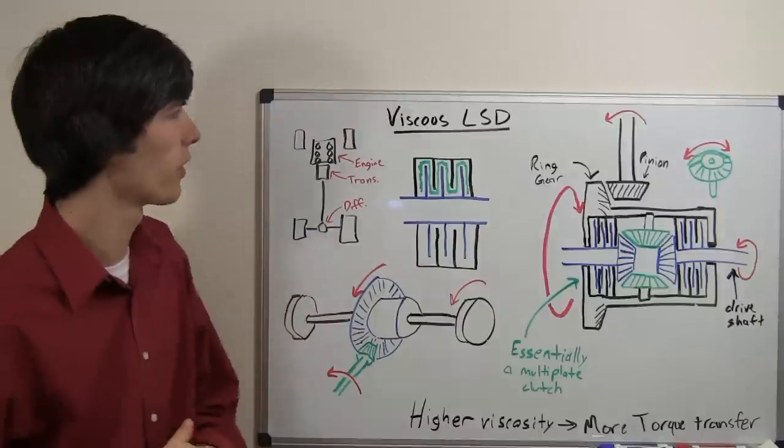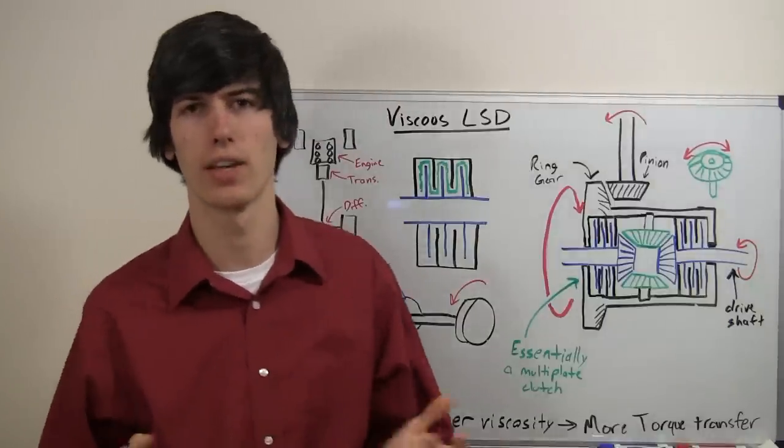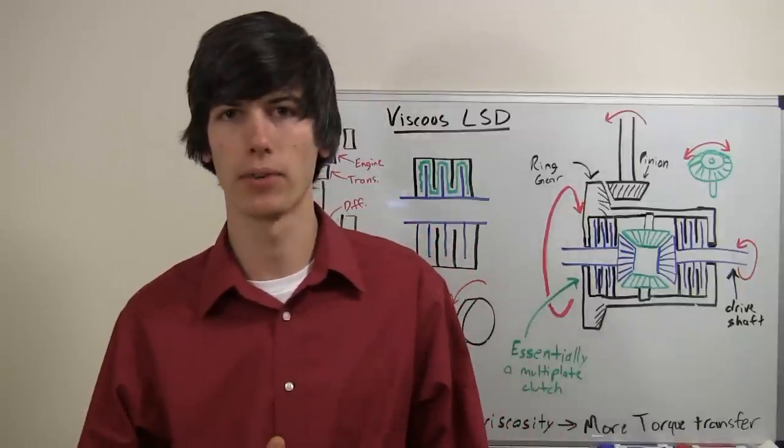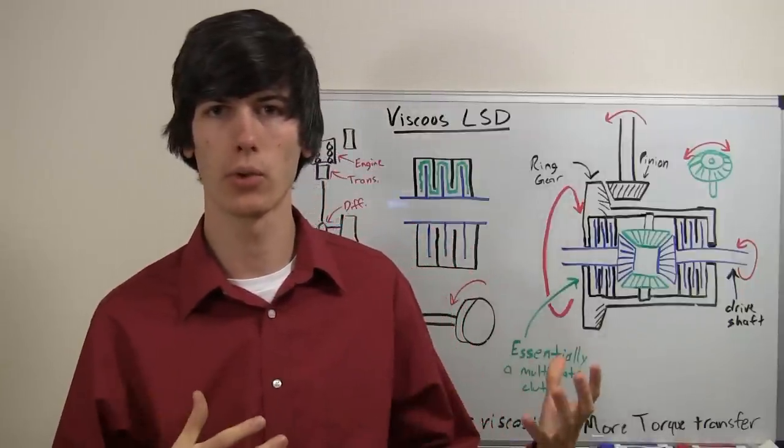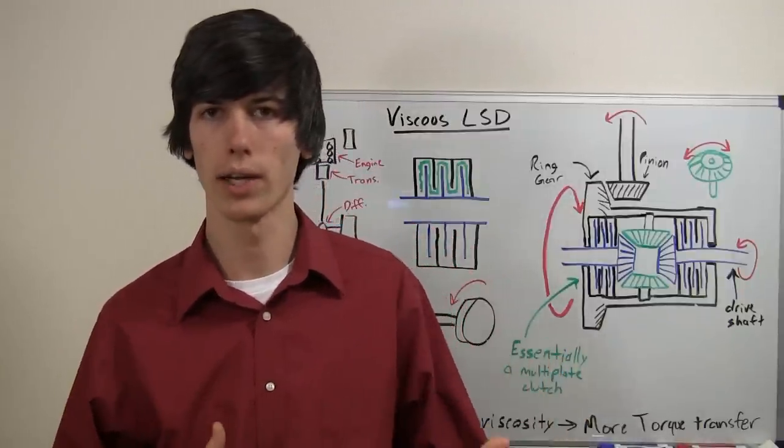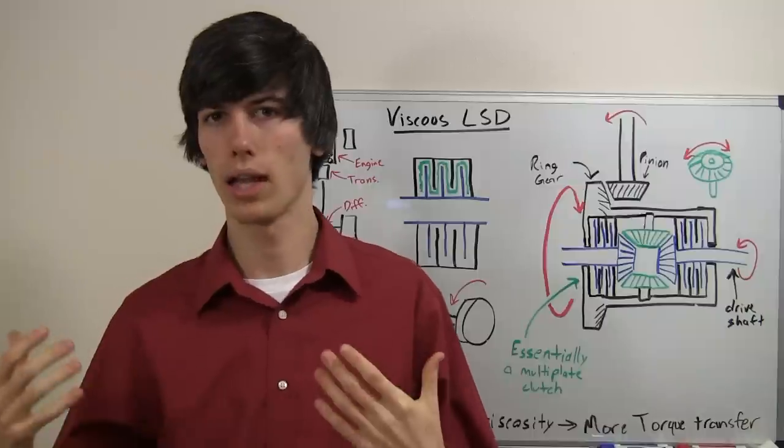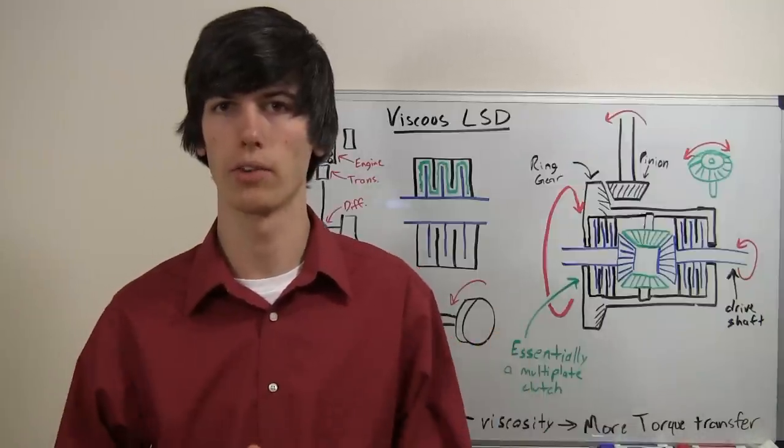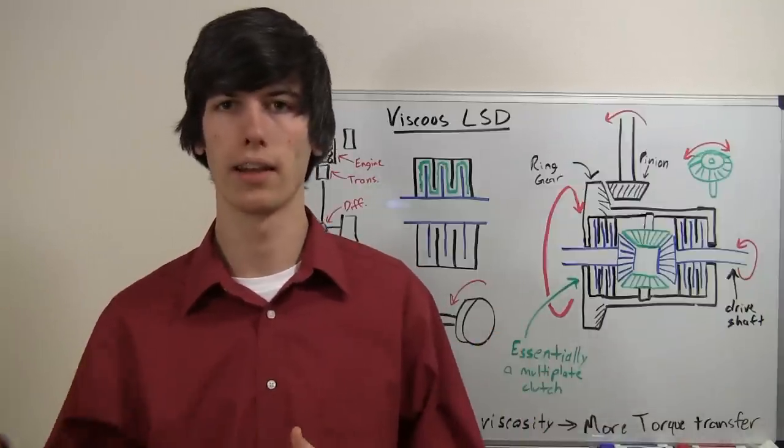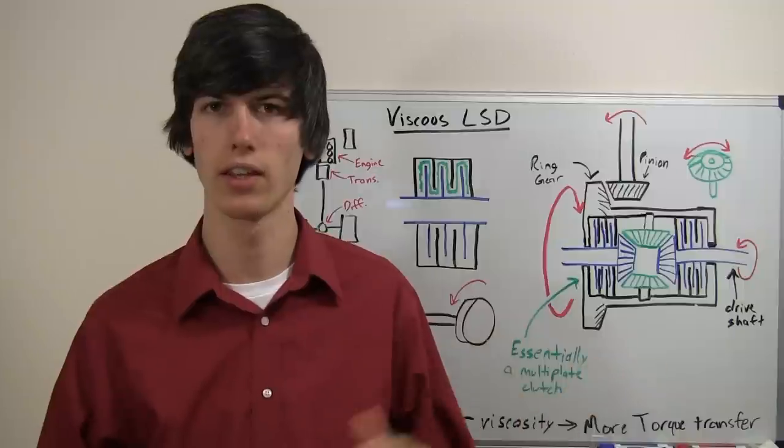The purpose of a viscous limited slip differential is the same as any limited slip differential, and that's to be able to transfer torque to the wheels with more grip while also allowing for the tires to rotate at different speeds so that when you go around the corner the outside tire can rotate faster than the inside tire.